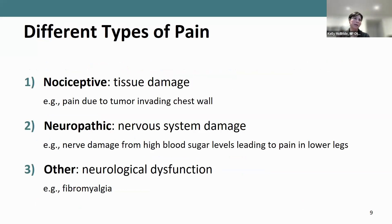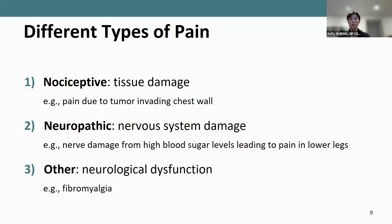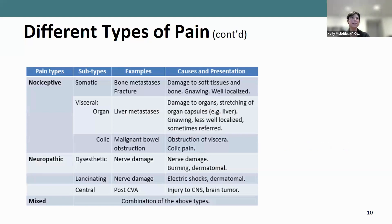In terms of the different types of pain: nociceptive is related to tissue damage, such as a tumor invading a cell wall or the chest wall. Neuropathic pain is related to the nervous system or damage to the nervous system — it could be from high blood sugar levels or inflammation. Other types include neurological dysfunction, for example fibromyalgia. We'll get into a detailed table looking at the different types of pain.